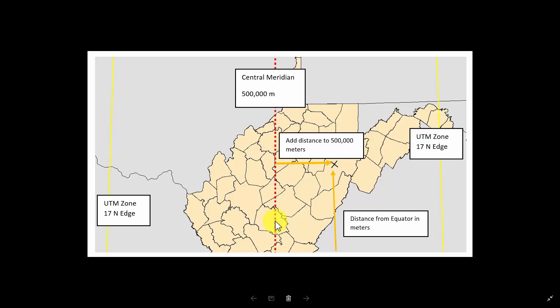In this example, the central meridian for zone 17 north is shown as a red dotted line. This centerline is assigned a value of 500,000 meters. If you move east of this line within a zone, you add distance. If you move west of this line within a zone, you subtract from 500,000.